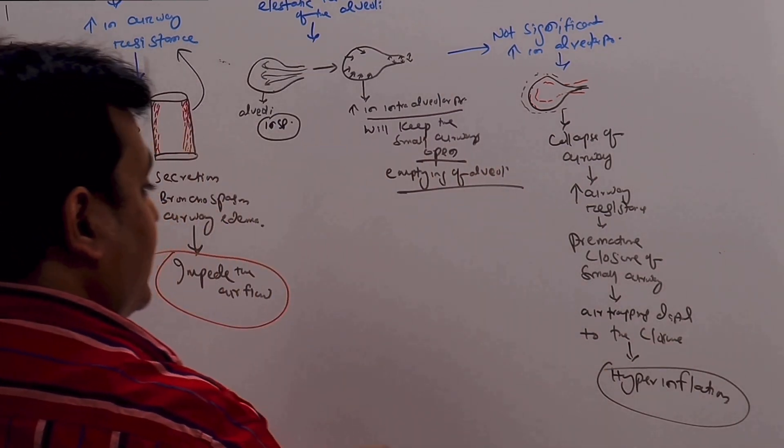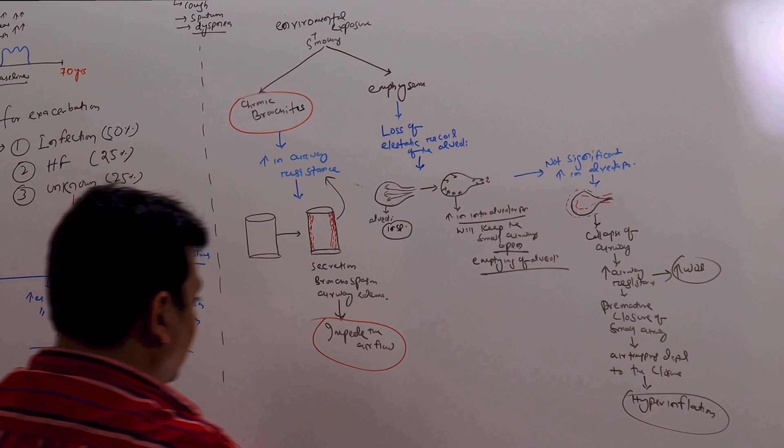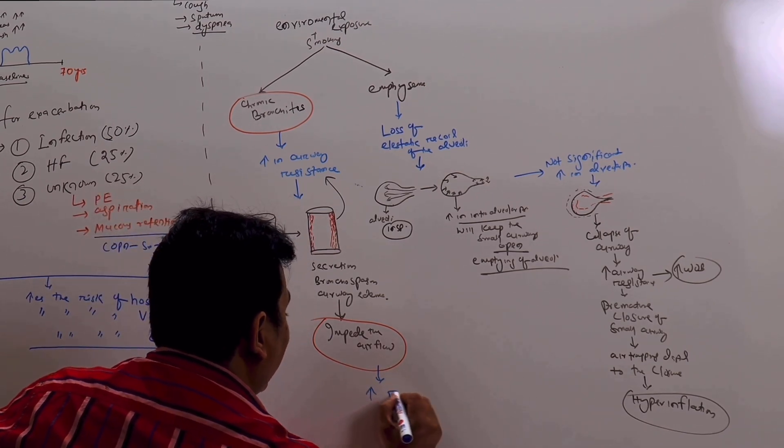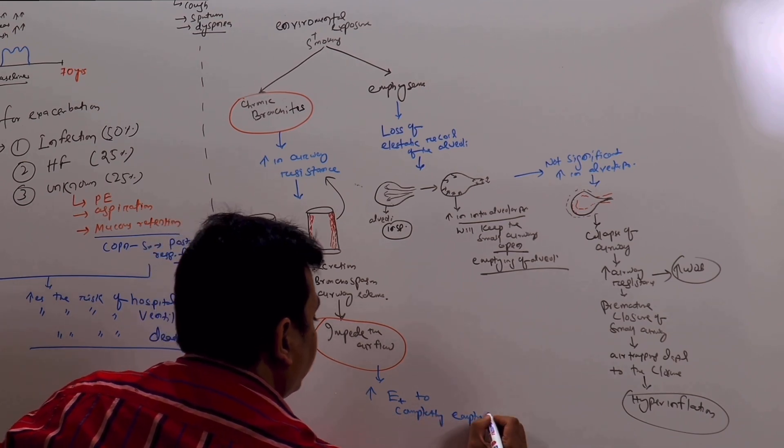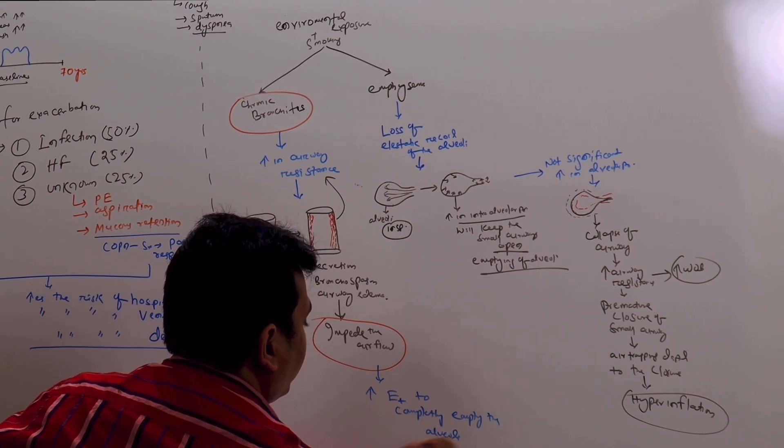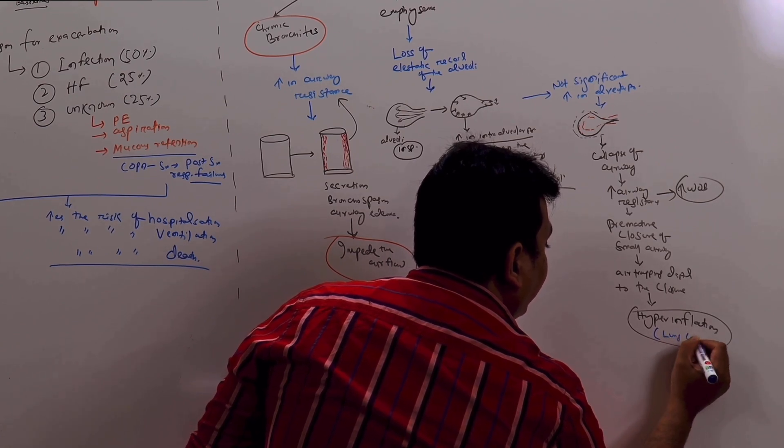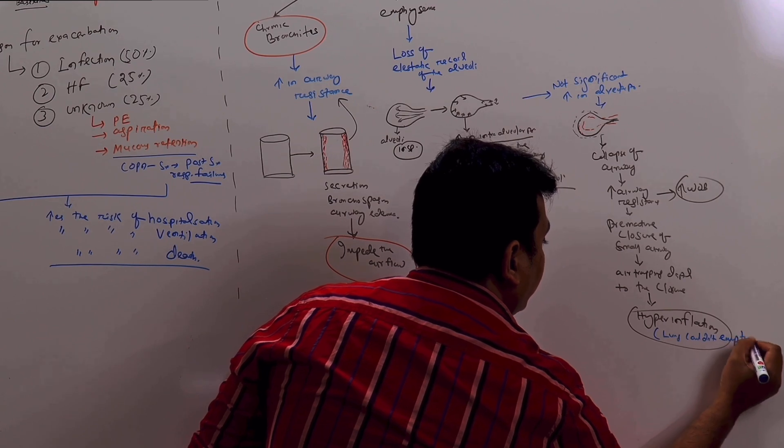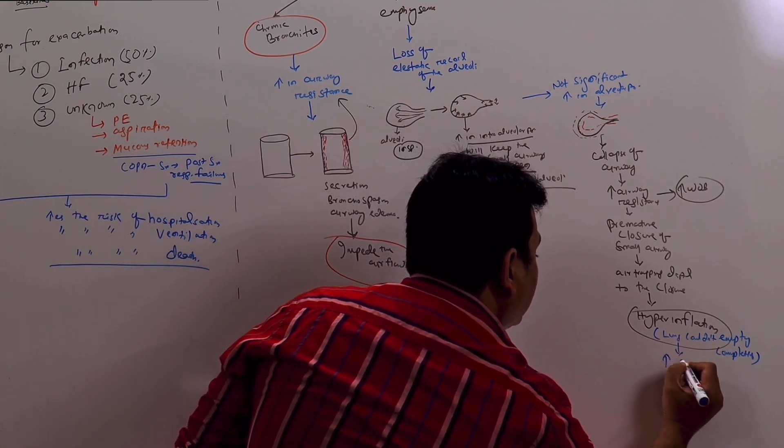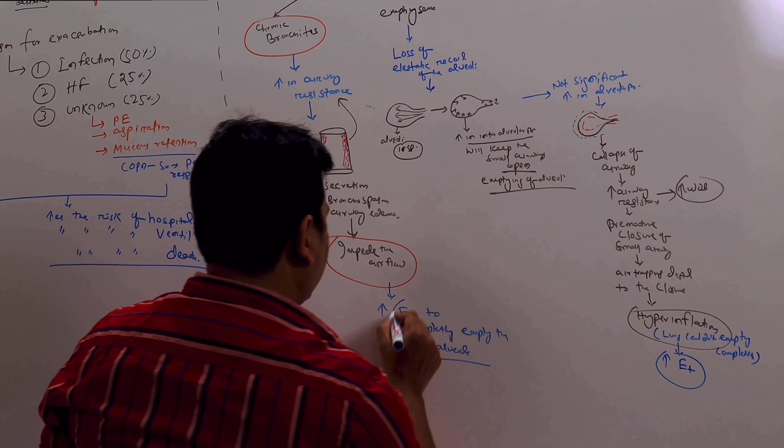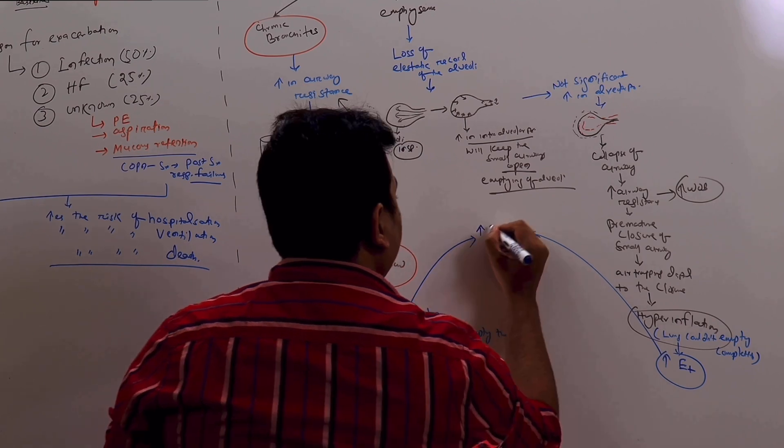And of course, because there is increase in air resistance, this will increase the work of breathing. Because it impedes the air flow, here also you need an increased expiratory time to completely empty the alveoli. Here also the hyperinflation means the lung or the alveoli could not empty itself completely. So here also we need an increased expiratory time for the lungs to completely empty.